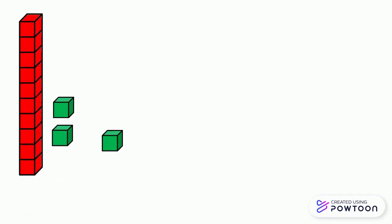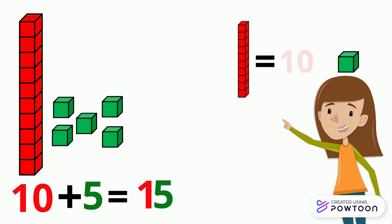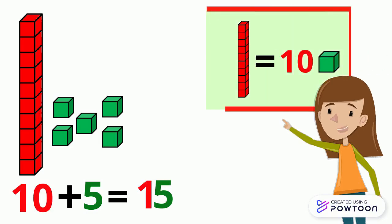We have one ten and five ones. Ten plus five gives us two tens. And we know that one ten equals ten ones.